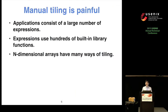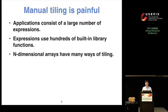It seems easy to do manual tiling for a simple expression, but an application can consist of many expressions, so the total number of possible tilings is huge. Moreover, an application usually uses many different APIs, and programmers need to understand what is good tiling for each API. Finally, many applications need n-dimensional arrays, which have many ways to tile. So we believe manual tiling is painful and should be avoided.